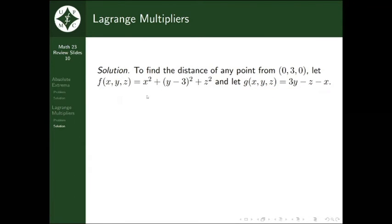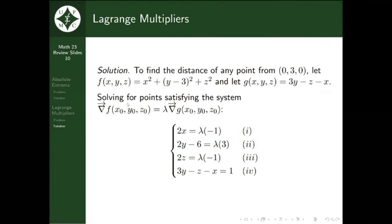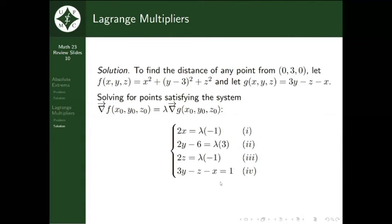For the method of Lagrange multipliers, we take functions f and g and set up the system: the gradient of f equals lambda times the gradient of g. We then look for the points that solve this system. The gradients can be verified independently. We also add a fourth equation, which is the equation of the plane, giving us the complete Lagrange multiplier system.